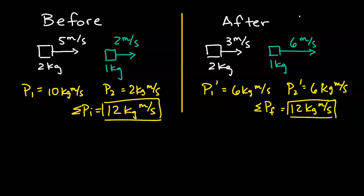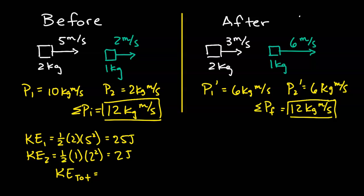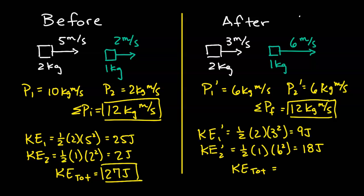Now let's take a look at energy. Before the collision, object 1 has a kinetic energy of 25 joules, using KE = ½mv². Object 2 has a kinetic energy of 2 joules. So the total kinetic energy before the collision is 25 plus 2, which is 27 joules. After the collision, object 1 has a kinetic energy of 9 joules and object 2 has a kinetic energy of 18 joules, giving a total of 27 joules. Since the kinetic energy before and after the collision is the same at 27 joules, this is an elastic collision.